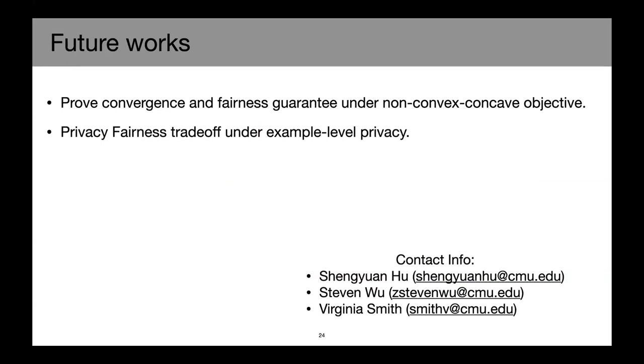Some of the future works that might be interesting to work on. In this work we are assuming convex concave objective. So it will be interesting to look at provable convergence and fairness guarantee under non-convex concave objective, since the fairness guarantee will be very different under the non-convex case. And our algorithm is also compatible with both silo level and example level privacy. So it will be interesting to study the formal privacy fairness utility trade-off under example level privacy.